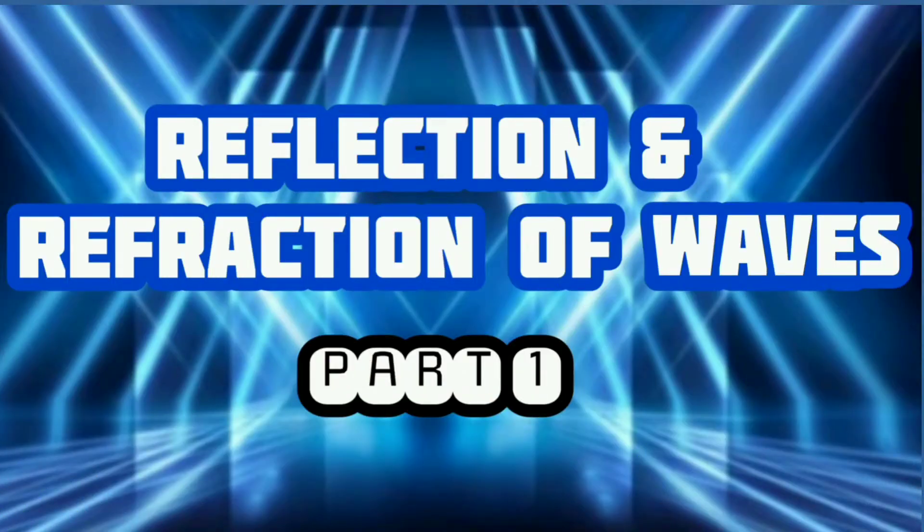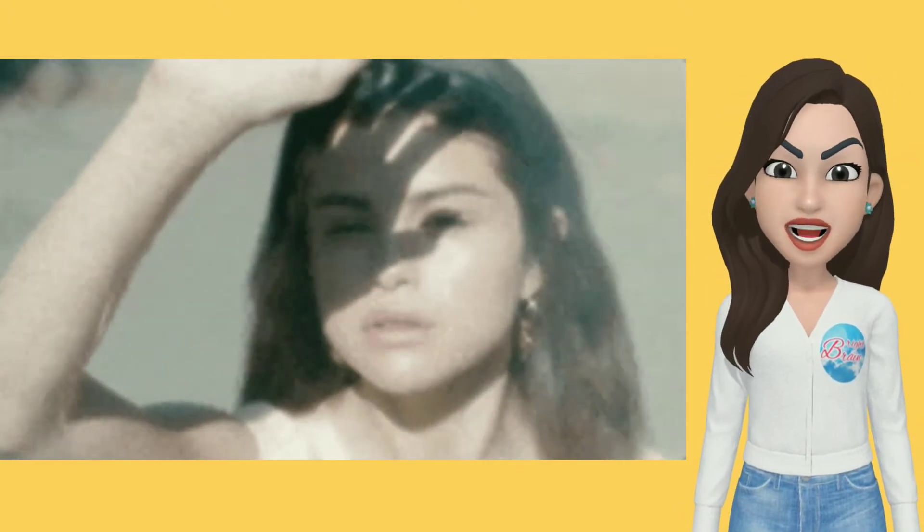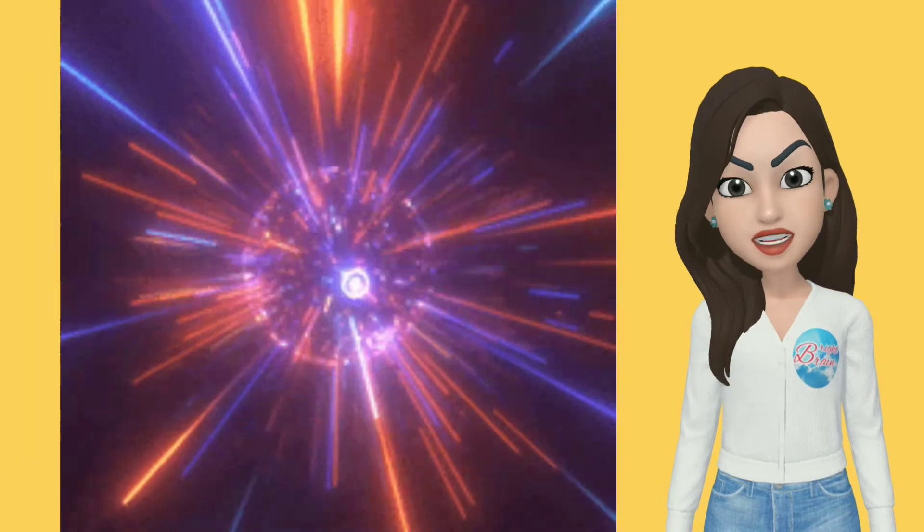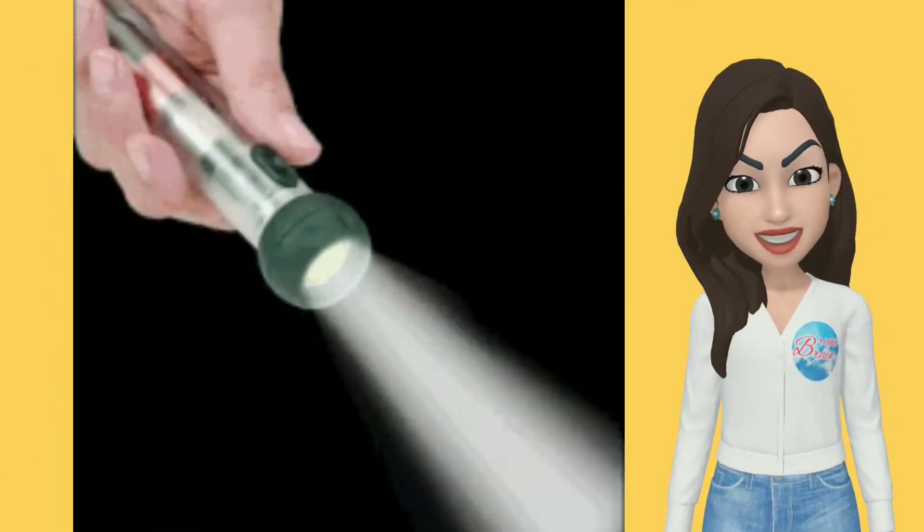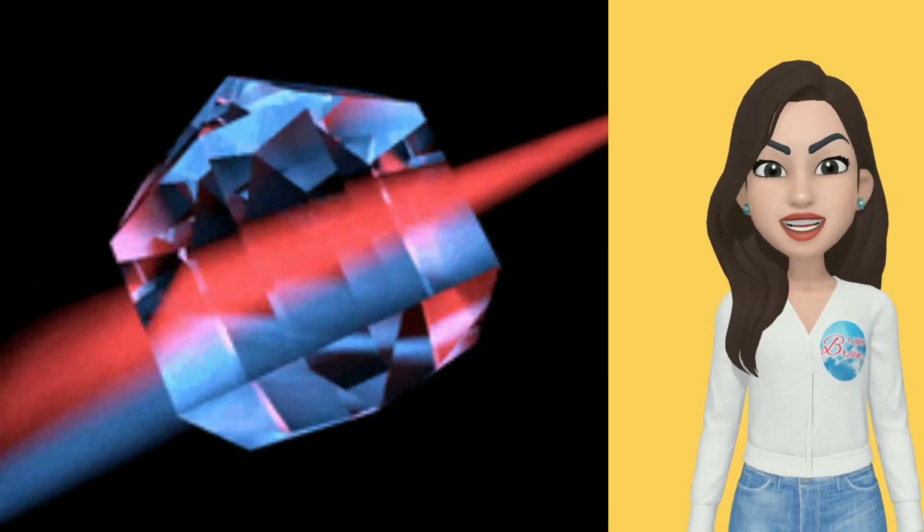Reflection and Reflection of Waves. Light is a form of energy and the fastest thing in the world. As known by everyone, light travels in a straight line. And today we are going to study about the bending of light.